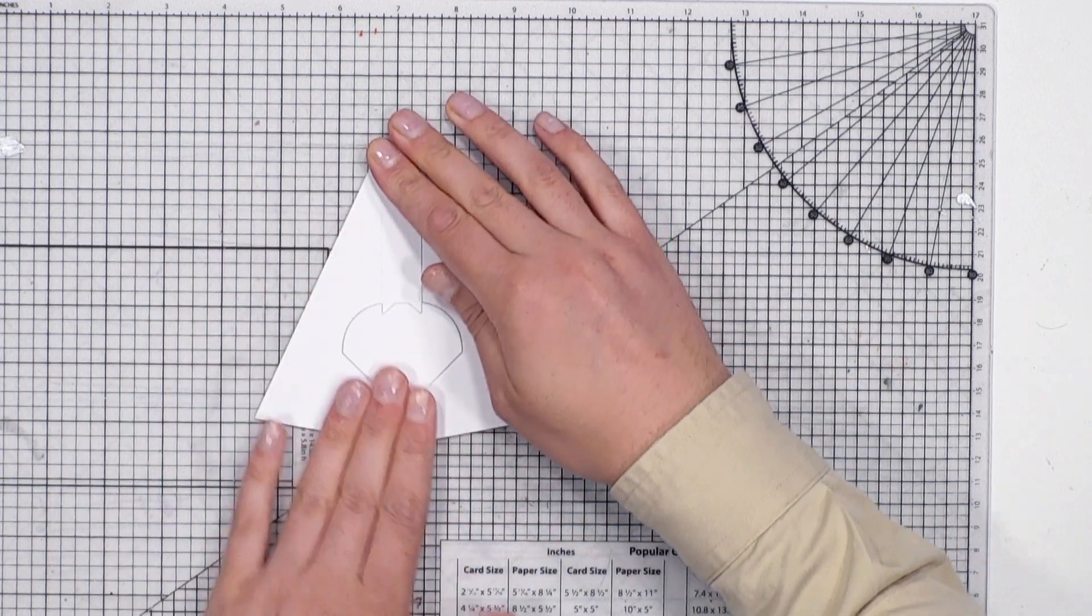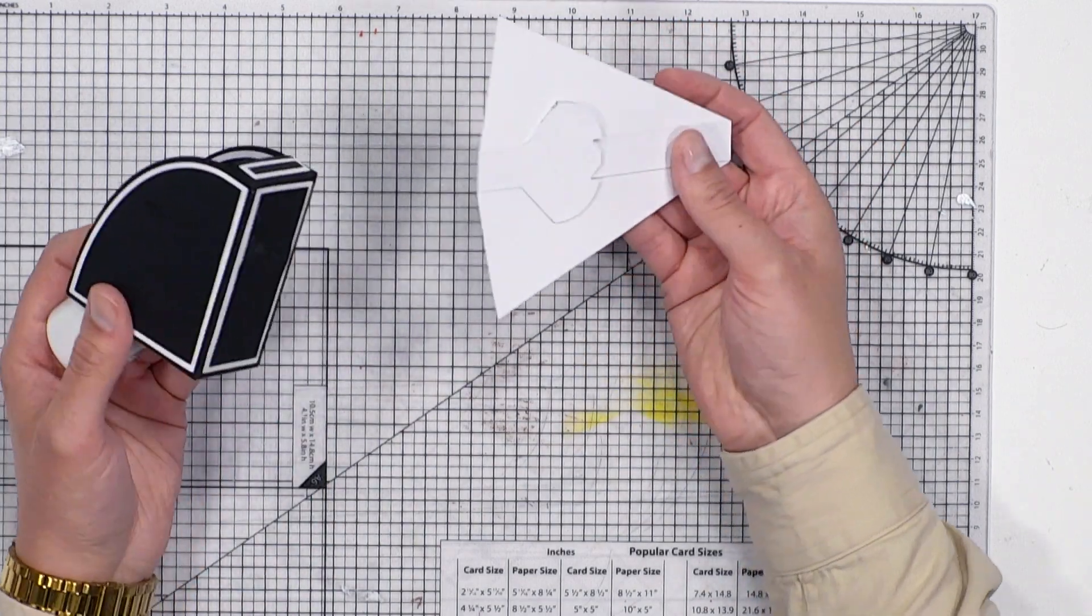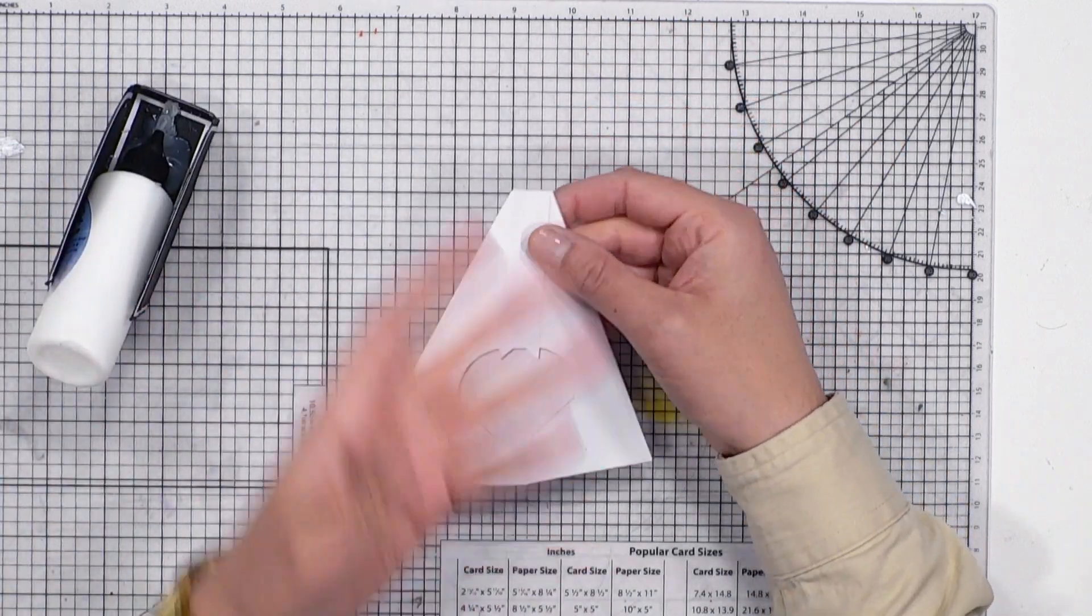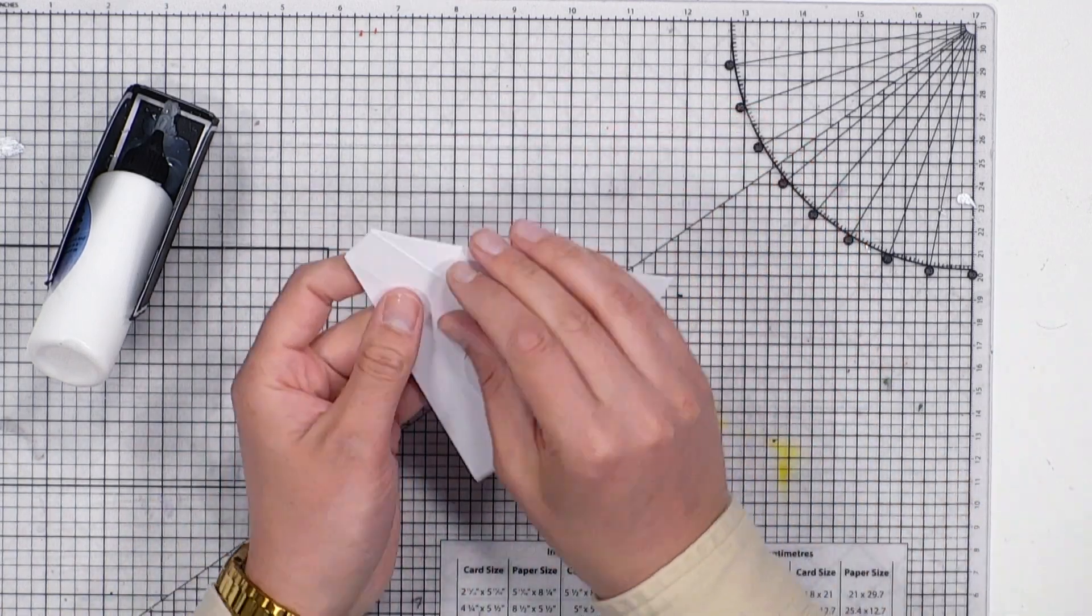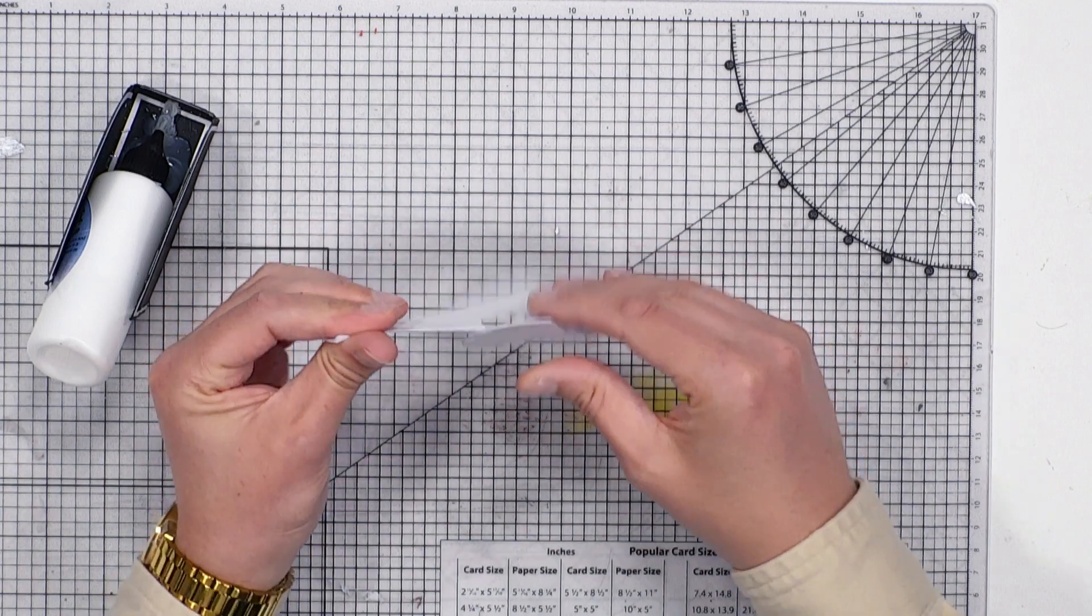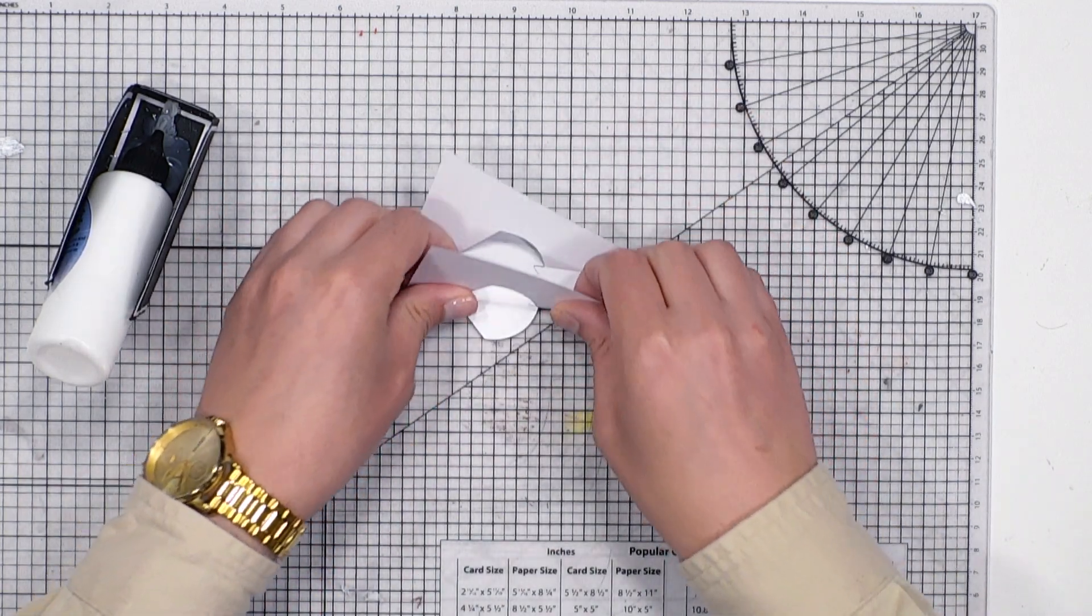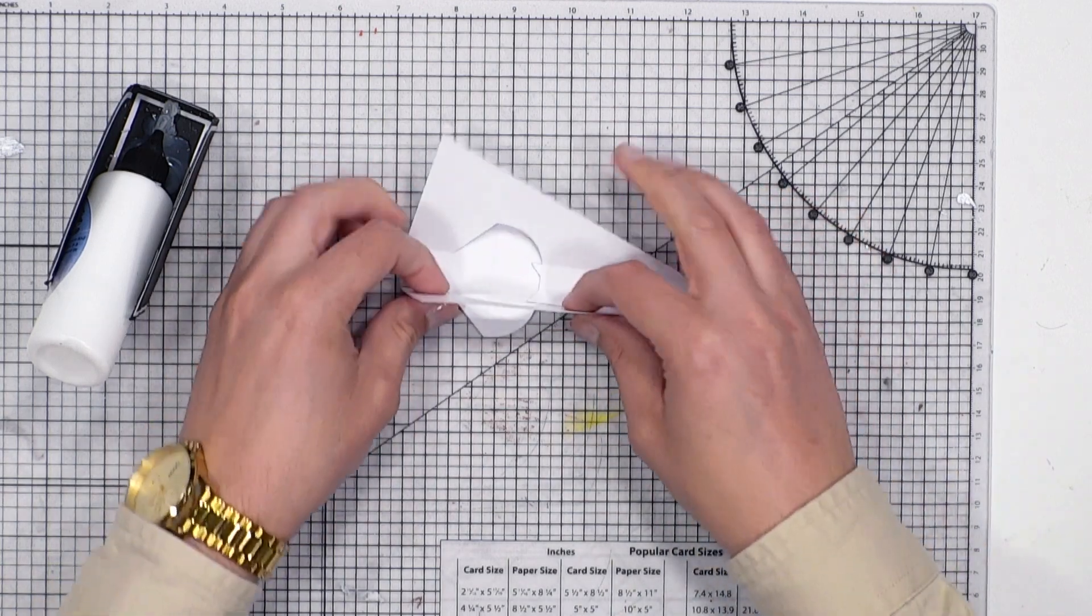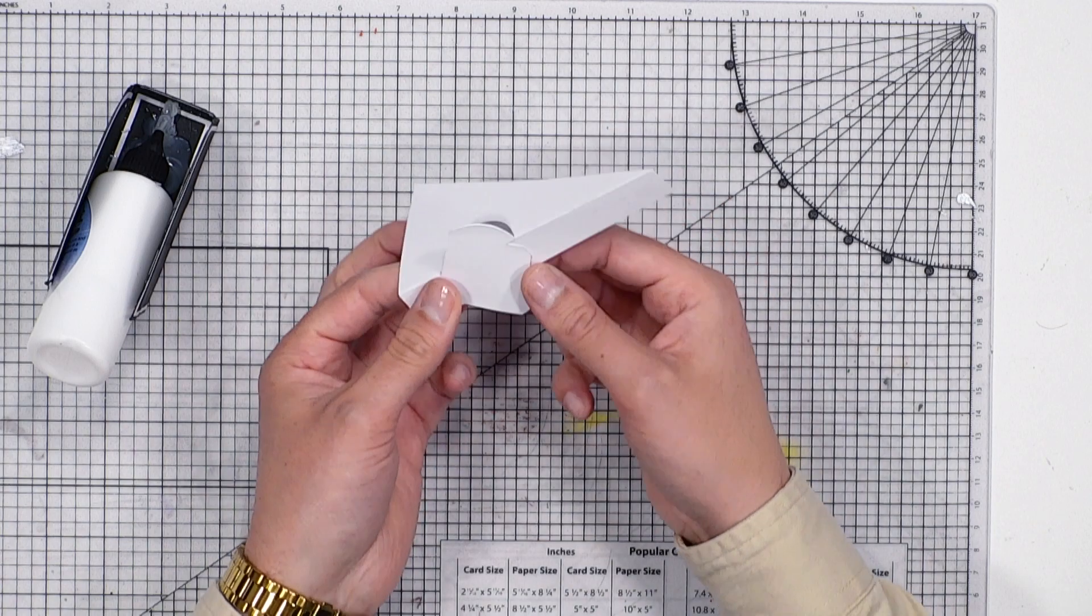I'm using a bookbinding glue and this dries within like a minute or two, but of course just let your glue dry. Or if you have used tape you can go straight on to the next step. Then what you want to do is score it, so following the score lines created by the die we're just going to reinforce that fold. I'm going to reinforce it again on this side here, so now we've created that signature shape.